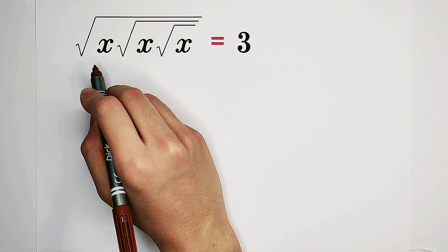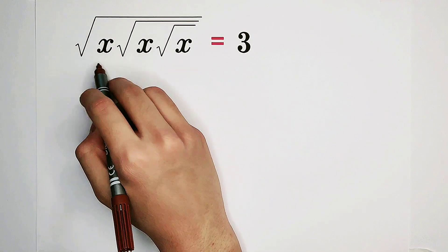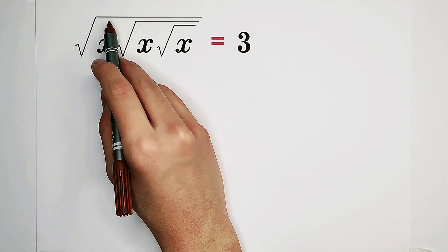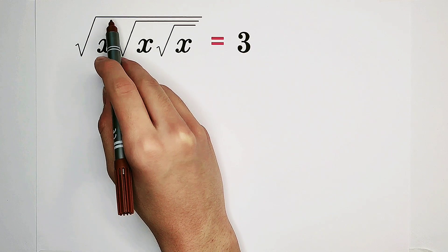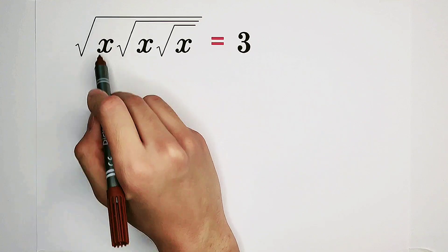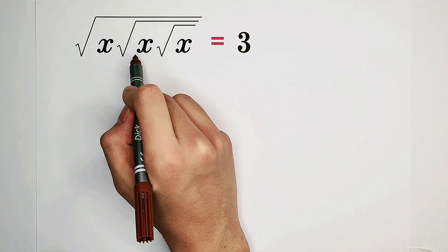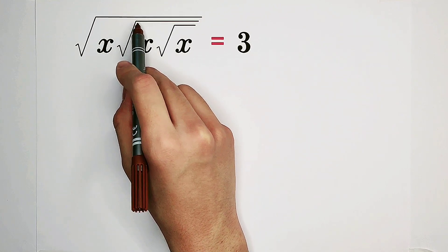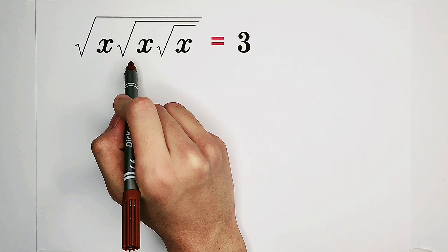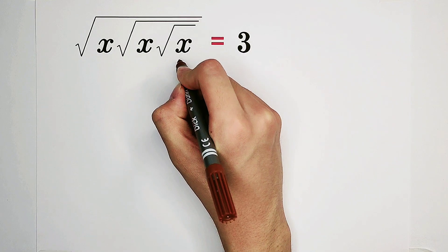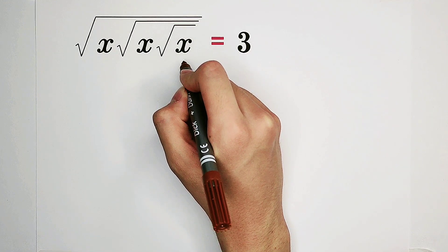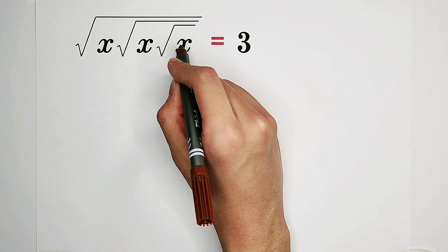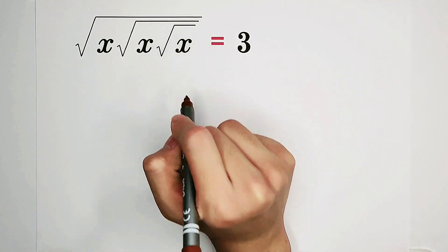Look. How many square roots does this x have? One — there is only one square root over it. How many square roots does this x have? Two, because it is square root of square root of x. How many square roots does this x have? Three — there are three square roots over it.